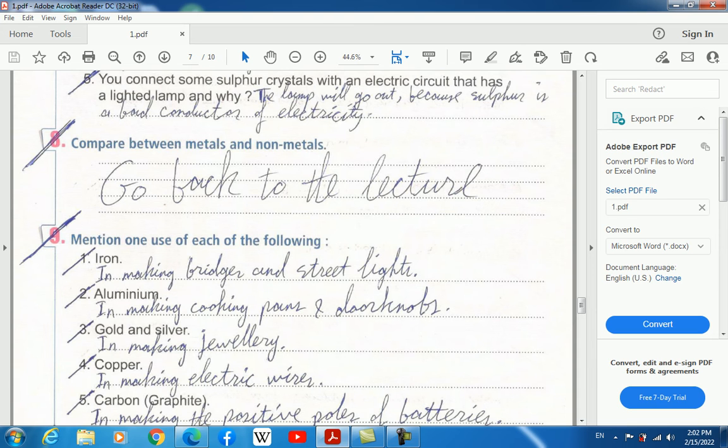You connect some sulfur crystals with an electric circuit that has a lighted lamp. The lamp will go out, and this is because sulfur is a bad conductor of electricity, so electricity will be cut off and will not continue.